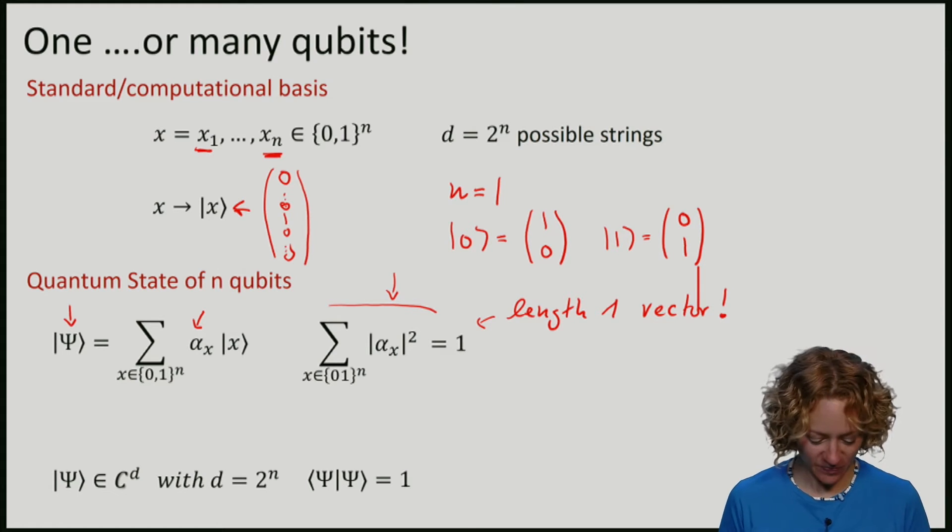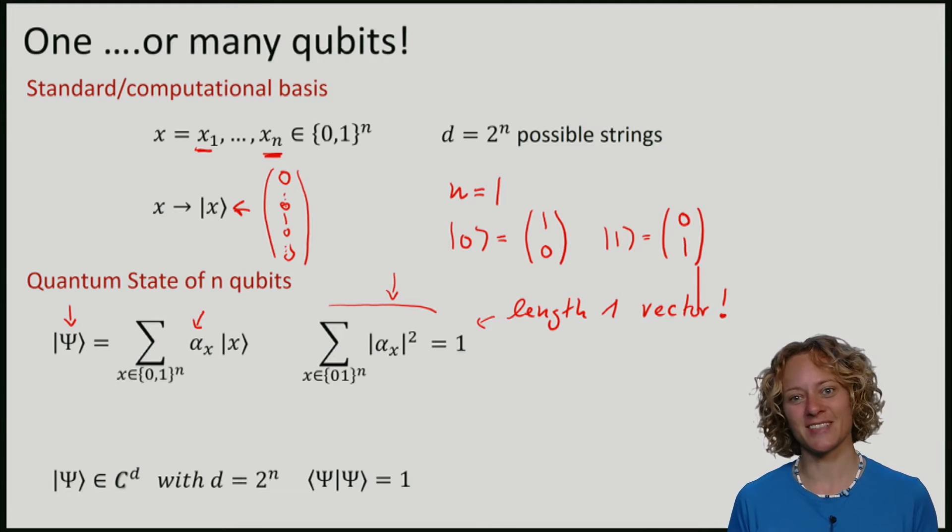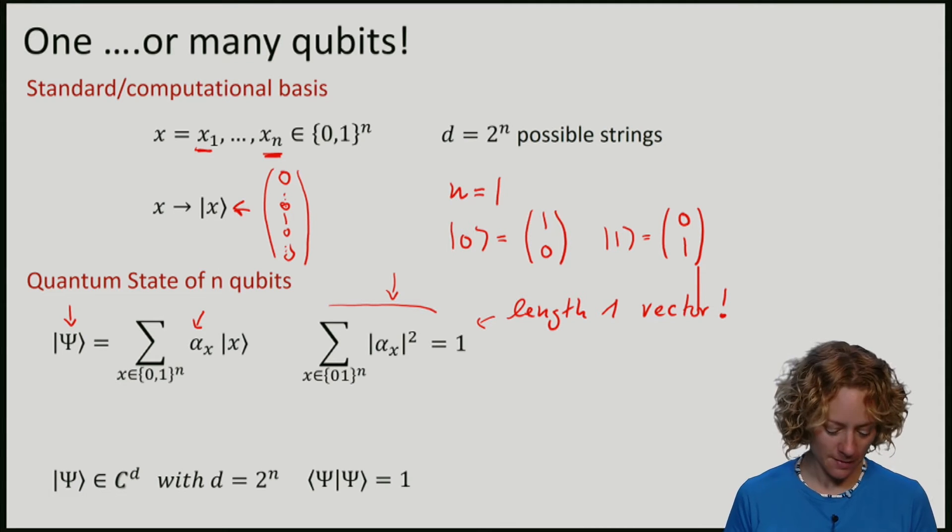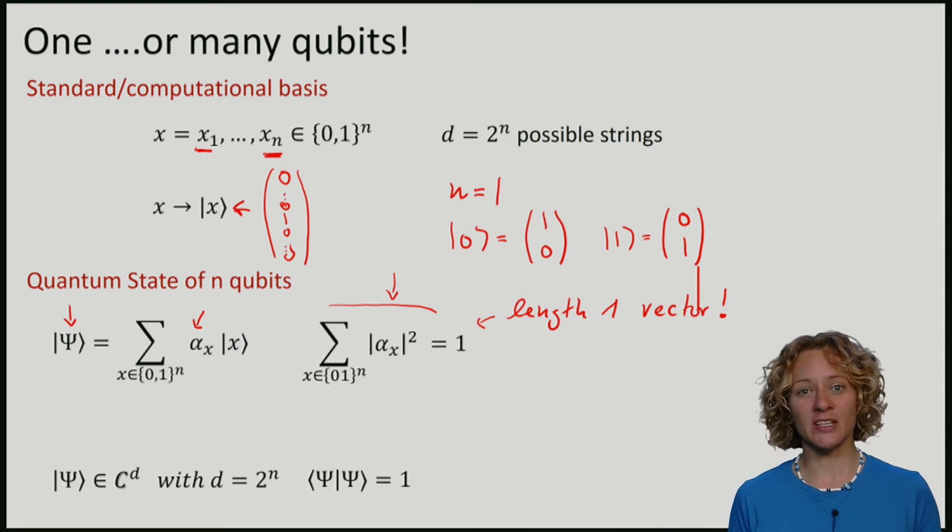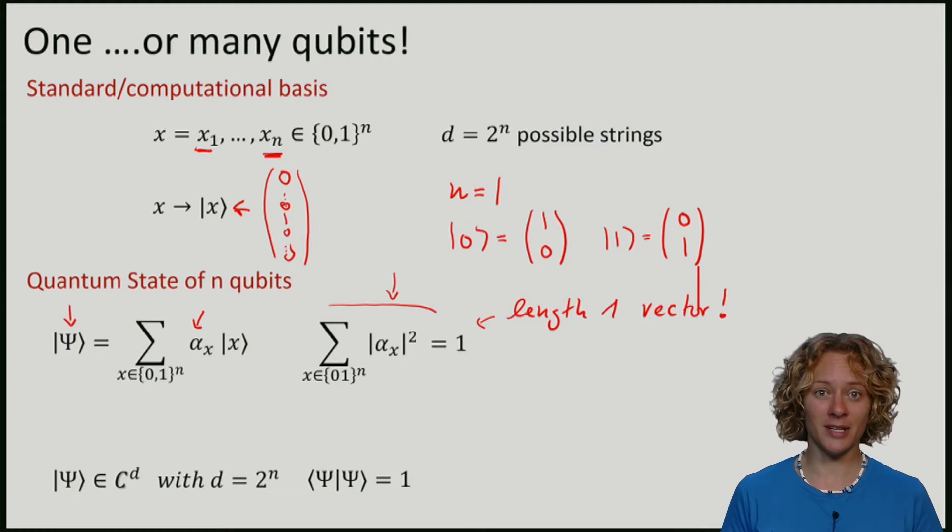To summarize, the state of n qubits is nothing else than a vector in CD, a complex vector space of dimension d, where the dimension is 2 to the n, n being the number of qubits, and it has length 1.